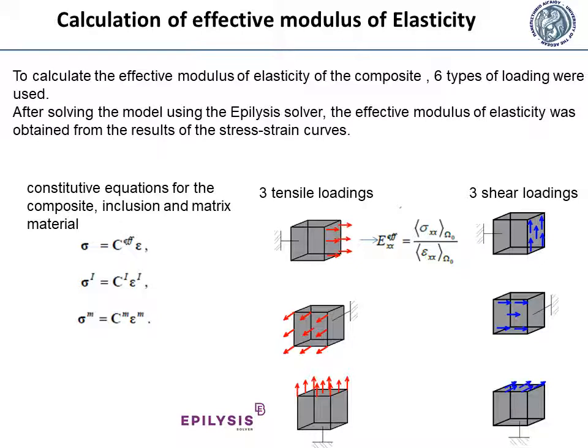In the red arrow figures, we can see the three tensile loadings used for calculating the effective tensile modulus of elasticity in three axes. For example, in the first tensile loading in the x-axis, the effective tensile modulus of elasticity of the x-axis is calculated. Accordingly, in the second tensile loading, the effective tensile modulus for the y-axis is calculated, and for the third tensile loading on the z-axis, the effective tensile modulus of the z-axis is calculated. For the three figures on the right, we can see the three shear loadings from which the shear modulus is calculated.